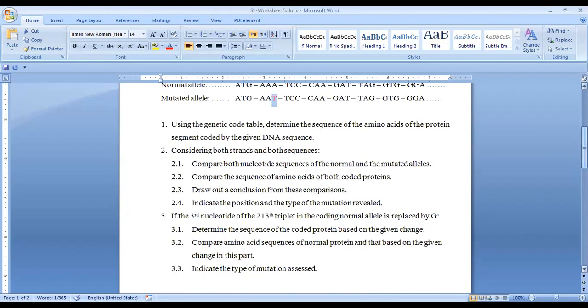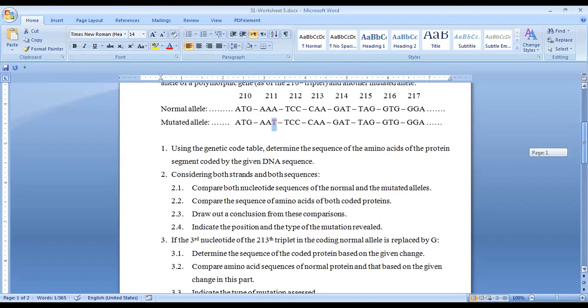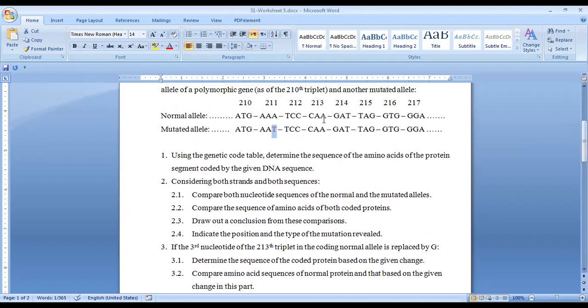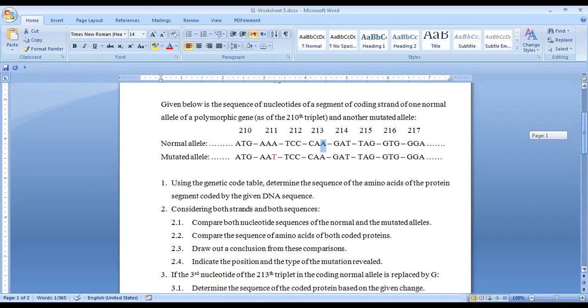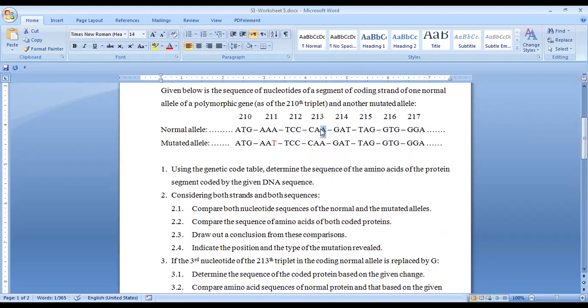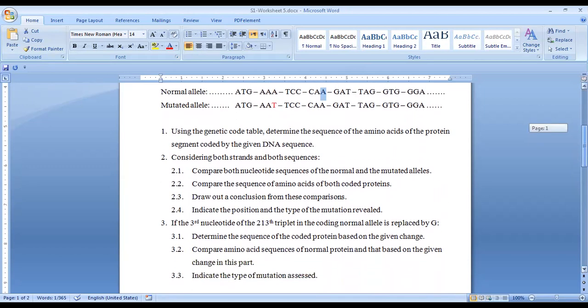Number three: if the third nucleotide of the 213th triplet in the coding normal allele is replaced by G, where is the 213th triplet? Here it is. Third nucleotide is the G, so A is substituted by G. You can determine the sequence of the coded protein. You have to give the sequence of the mRNA, and then the sequence of the amino acid. Indicate the type of mutation. Here, type of mutation will change a sequence. It's substitution - either silent, missense, or nonsense. If it causes the appearance of a stop codon, it's called nonsense. If it changes the sequence, it's called missense. If it doesn't cause a change in the sequence of the amino acids, it's called silent mutation.